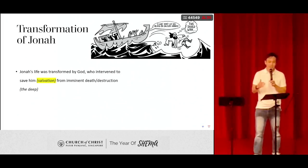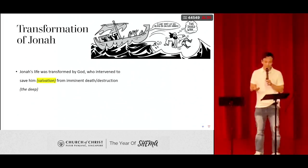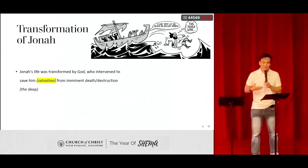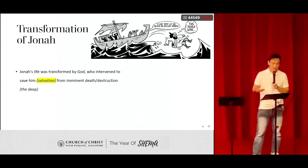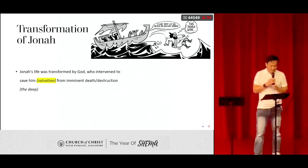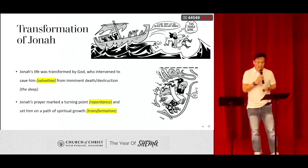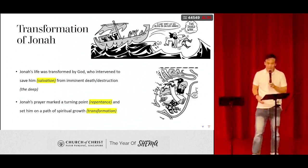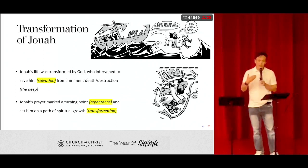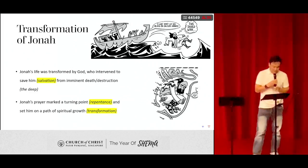God interrupted Jonah's usual course towards Tarshish. Jonah bought tickets for the ship, went down into the basement and slept. But God, time and again, disturbed and interrupted to wake him. Eventually, God saved him from imminent death and destruction when the sailors threw him overboard. And Jonah's prayer became the turning point — it set him back on the path of salvation and spiritual growth. When he prayed to God, he confessed and lamented his wrongdoing, asked God to save and rescue him, and God did that.